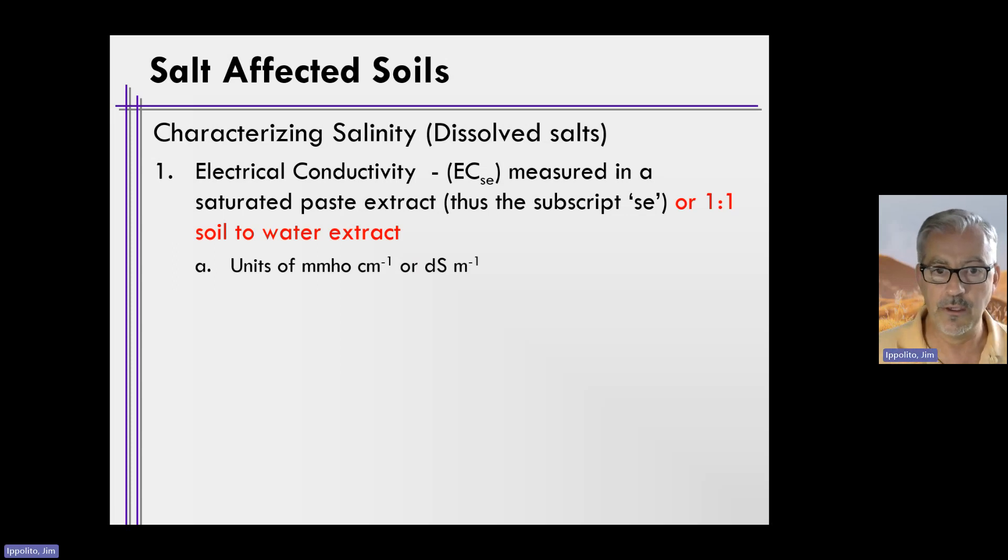The units that we use are millimhos per centimeter. Sometimes there's an S after mmho, sometimes there's not. It just depends on the lab and the convention that the lab is using, but they're both the same unit. That's the English unit, and oftentimes when you see electrical conductivity from a soil test, from a lab, you'll see it expressed in millimhos per centimeter.